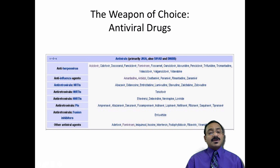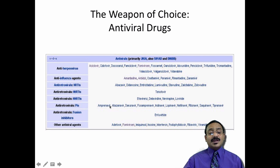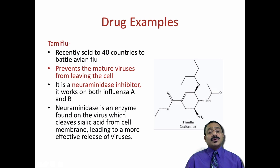The weapons of choice in antiviral therapy include anti-herpes, anti-influenza, and anti-retroviral drugs. A useful naming rule: anything ending in '-vir' is typically an anti-retroviral drug, while drugs like idoxuridine, tromantadine, or zidovudine are also anti-retrovirals. Tamiflu is given for influenza A and B, sold in over 40 countries to battle avian influenza.